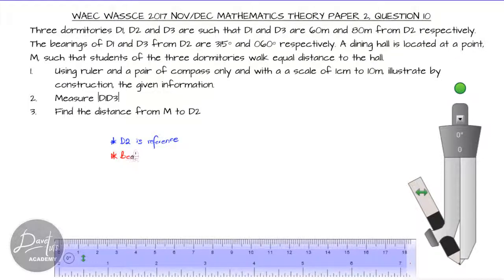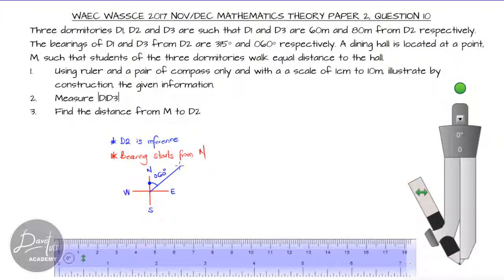One key feature to note is that D2 is the point of reference. When taking a bearing, it normally starts from the north, so our measuring is going to start from the north. For the bearing of 060, we measure 60 degrees from the north. For 315, we also measure from the north of the cardinal coordinate, giving us 315 degrees.